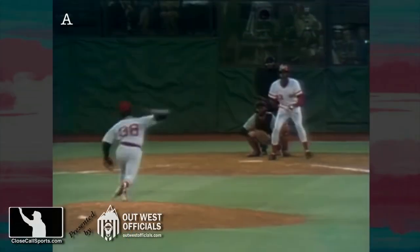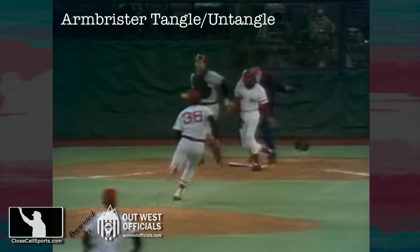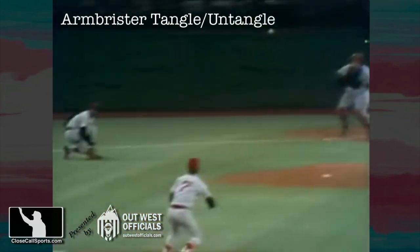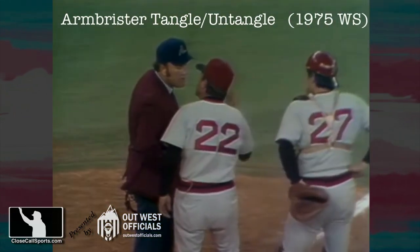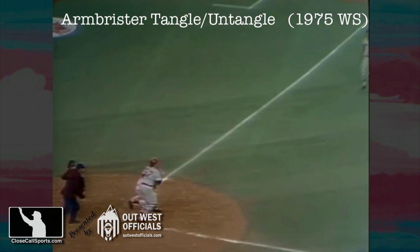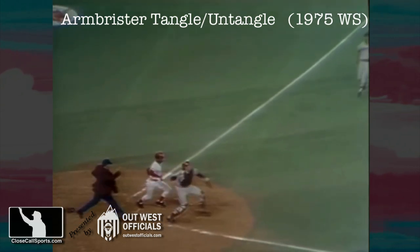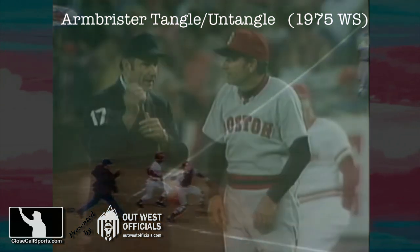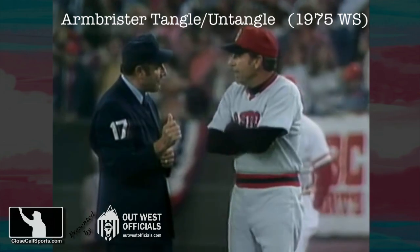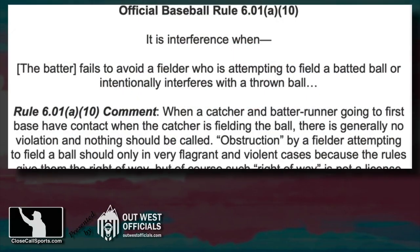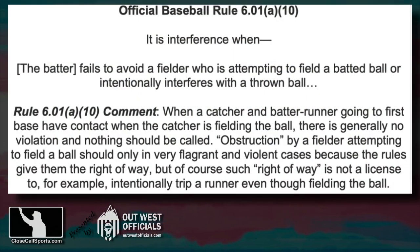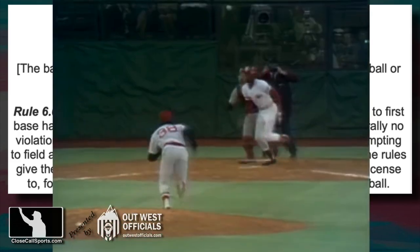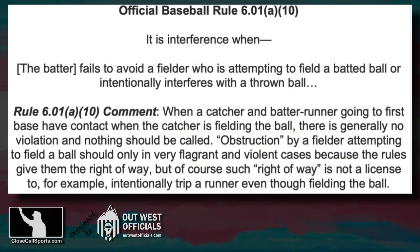Longtime viewers and umpires alike will recognize this as an example of what's called an Armbrister tangle-untangle. Going back to the 1975 World Series Game 3, when Carlton Fisk got tangled up with Armbrister, it was no-called and became the basis for the rule interpretation that is now the comment in the rule — that this play, a quick tangle-untangle where everyone is doing what they're supposed to be doing, is a no call.